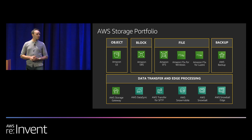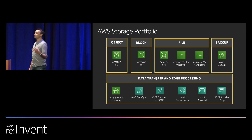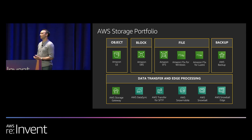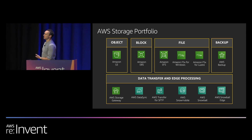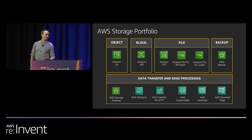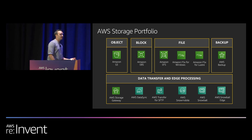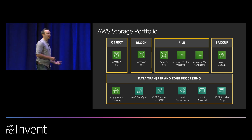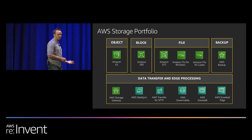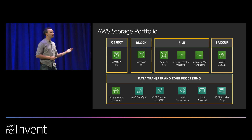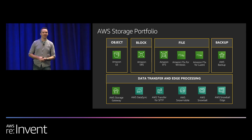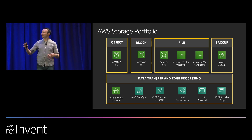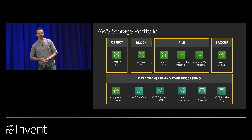From the AWS storage portfolio, we have three core offerings: Object Store, Block, and File. For Object we have S3, for Block we have EBS, and for File Storage we have EFS — NFS across an entire region — FSx for Windows, FSx Lustre which delivers tens or hundreds of gigabytes per second and you can destroy the file system when done. We also have lots of ways to move data in and out of the cloud.